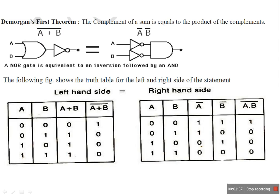In this module, we will learn De Morgan's theorems. There are two theorems: De Morgan's First Theorem and De Morgan's Second Theorem. De Morgan's First Theorem — what is the statement? The complement of a sum is equal to the product of the complements.